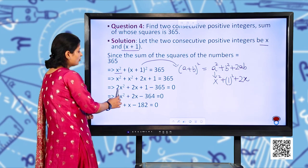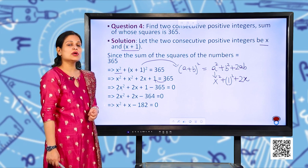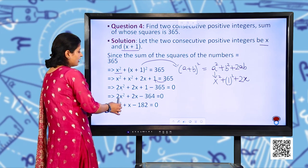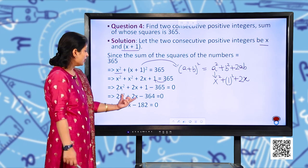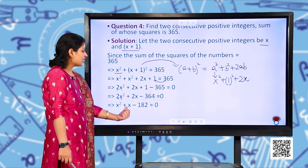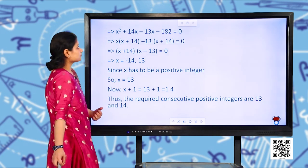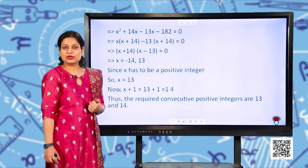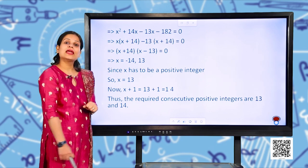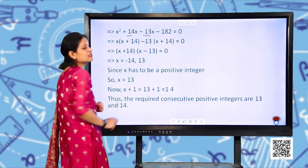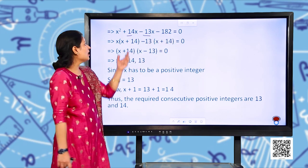Combining terms: 2x² + 2x + 1 = 365, and transposing 365: 2x² + 2x − 364 = 0. Dividing through by 2: x² + x − 182 = 0. We need two numbers whose product is −182 and whose sum is 1. Those numbers are 14 and −13: 14 × (−13) = −182 and 14 + (−13) = 1.